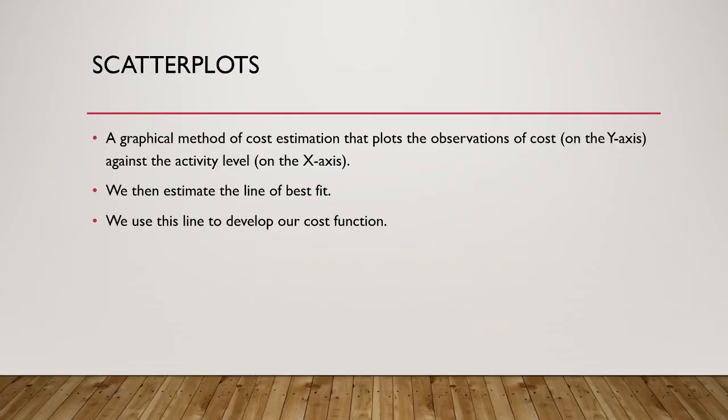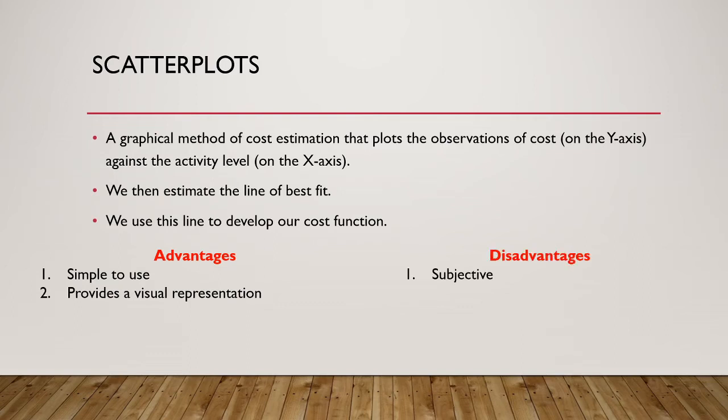Our last method for this video is a visual method. Visual methods are nice because we can see what is going on. So, scatter plots are a graphical method in which the cost is plotted on the y-axis, while the activity level is plotted on the x-axis. Once the data are plotted on the graph, we subjectively estimate the line of best fit, and use this line to develop our cost function. This method is very easy to use and provides a visual representation, which makes it easy to explain to people. Also, the visual representation will help us to identify any anomalies, such as outliers or non-linearity. Remember, for this series, we are assuming that all our cost functions are linear.